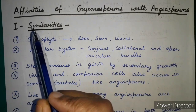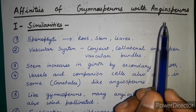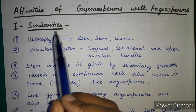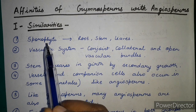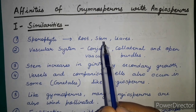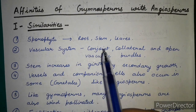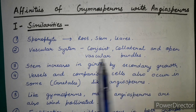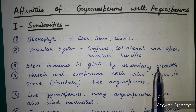Now we will discuss the affinities of gymnosperms with angiosperms, beginning with similarities. The sporophyte in both consists of root, stem, and leaves. The vascular system in both is conjoint, collateral, and has open vascular bundles. The stem increases in girth by secondary growth in both gymnosperms and angiosperms.